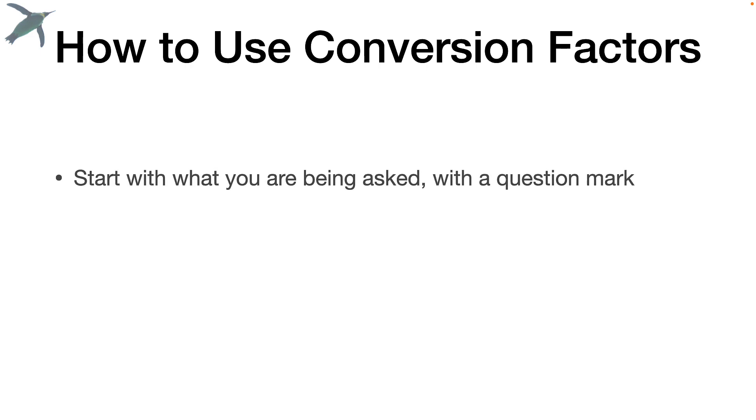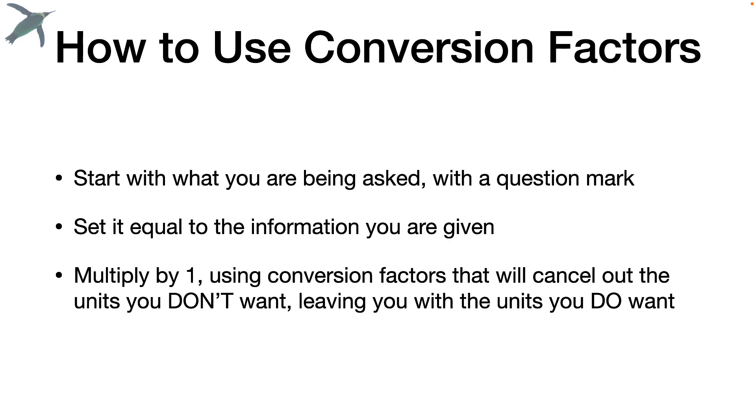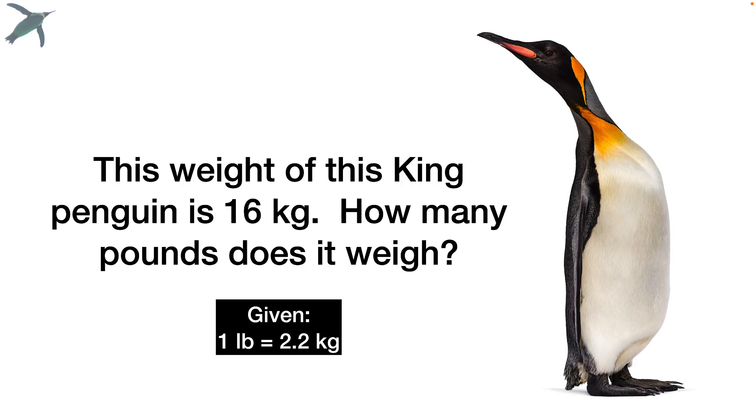So how to use conversion factors? I recommend you start with what you're being asked and actually put a question mark there. Then set it equal to the information you're given and then multiply by one using conversion factors that will cancel out the units you don't want, leaving you with the units that you do want. As an example,